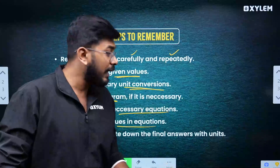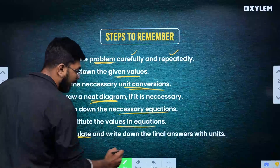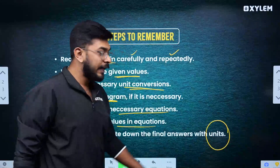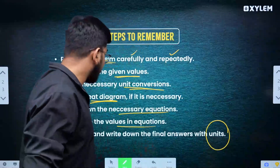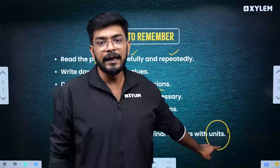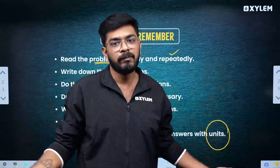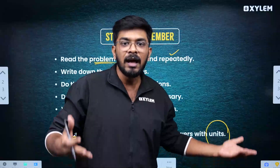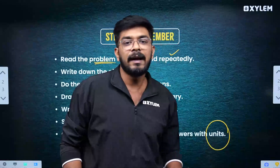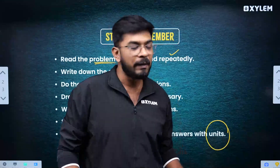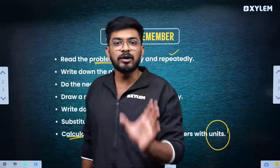In the equation, substitute the given values. Then calculate and write down the final answer with units. For example, for electric field, you write the value with its unit. If you write the final answer without units, it is incomplete. Always include the correct unit — master the units and mark them. If you follow these steps, you will solve the problem correctly and score marks easily.